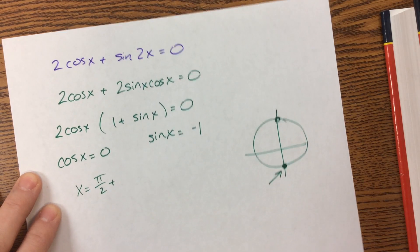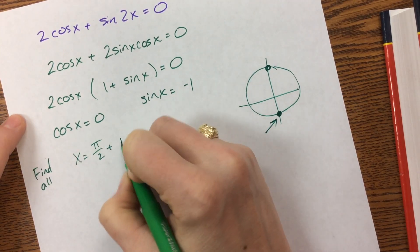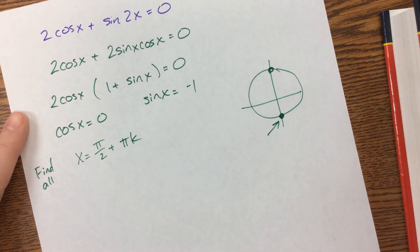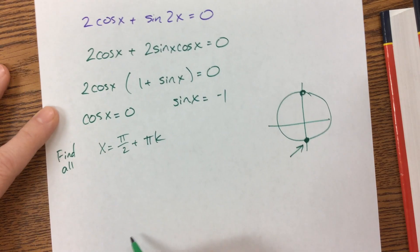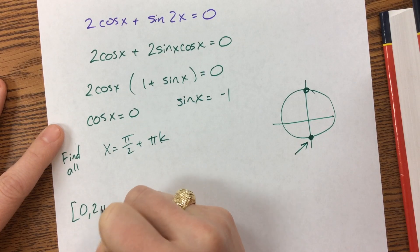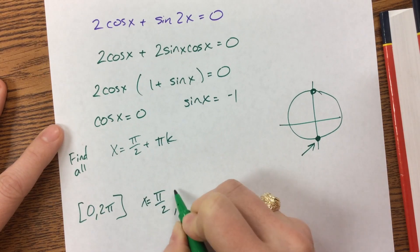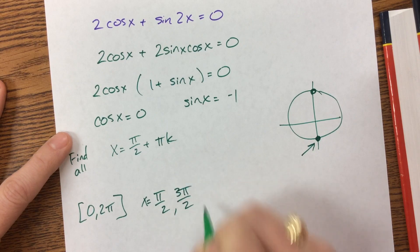Well, that's already included on this one. So if they said find all, the easiest thing to do would just be this and move on with our lives. If they said on the interval from 0 to 2 pi, we have x equals pi over 2 and x equals 3 pi over 2. And that's it.